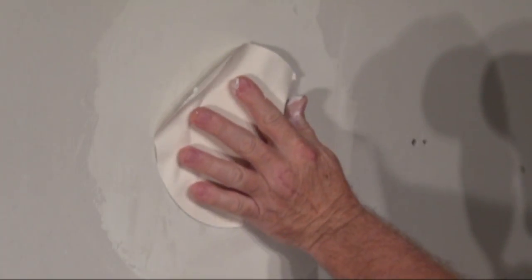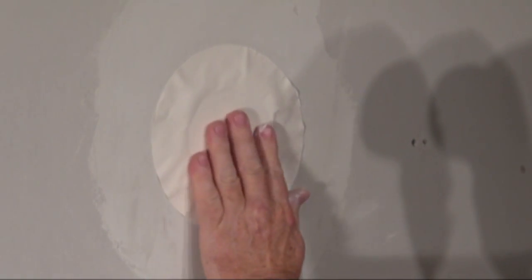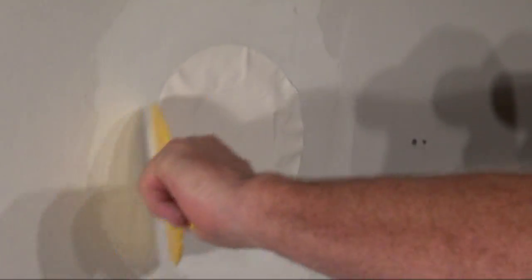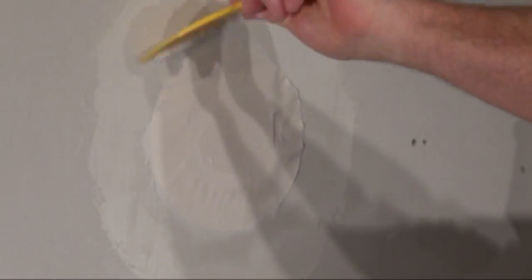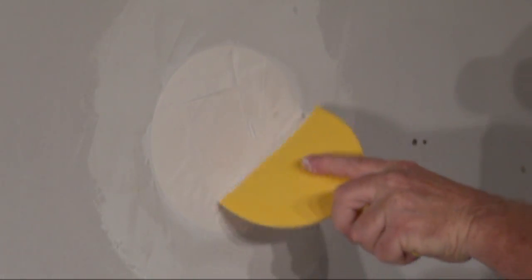Insert the plug into the hole and trowel out the excess compound, moving from the center of the plug to the outer edge until the paper is smooth against the wall surface. If bubbles appear, lift the paper and add more compound, then trowel out the excess.